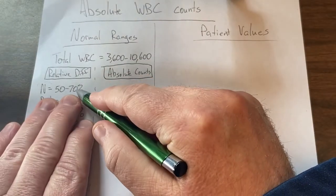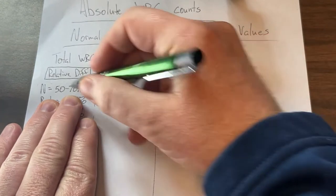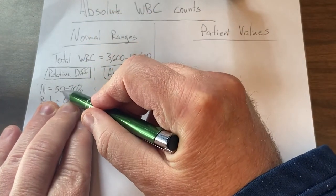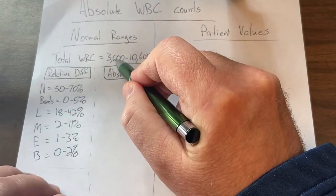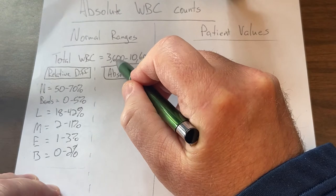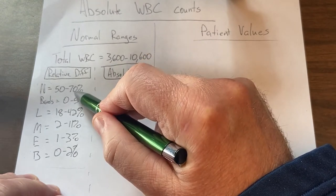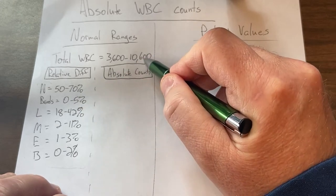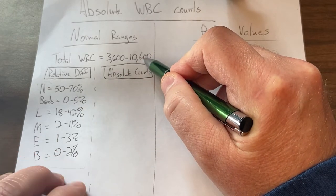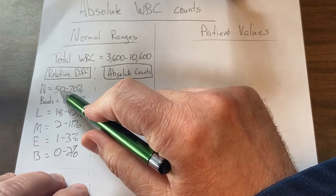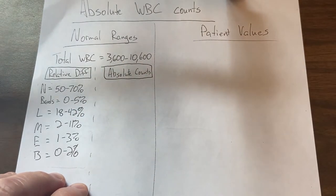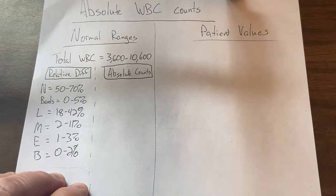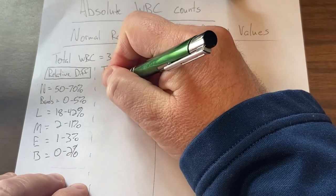When calculating values for these particular items, if I want to know the range for the absolute neutrophil count, I would take the low end of the relative count times the low end of the total white blood cell count, and then the high end of the relative count times the high end of the total white blood cell count. So that calculation is 50 percent of 3,600.